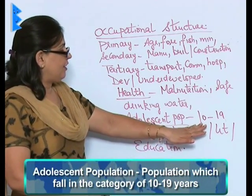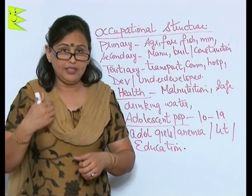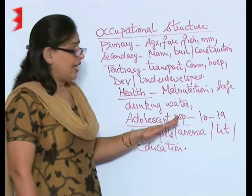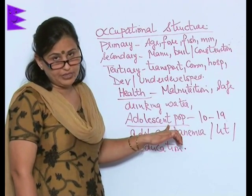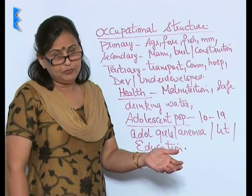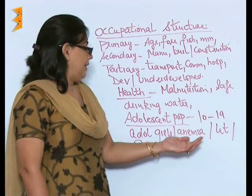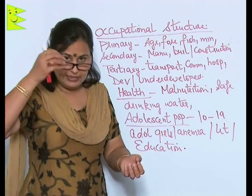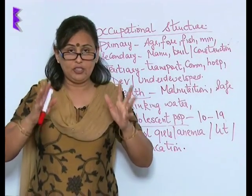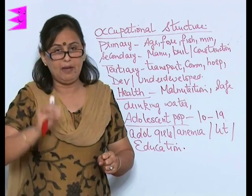Adolescent population is that population of the country which falls in the category of 10 to 19 years. They are the most important population because they are the future of the country — they are the ones who are going to lead the country in the future. Most adolescent girls in India face the problem of anemia. If the adolescent population is literate, educated, healthy, aware, knowledgeable, and has skills, then the country is considered a successful, developed country.